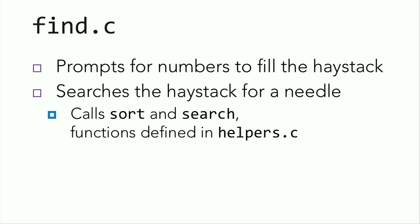The first thing you might notice about find is that we already have code written for us. This is called distribution code, so we're not just writing our own code from scratch anymore. Rather, we're filling in the voids in some pre-existing code. The find.c program prompts for numbers to fill the haystack, searches the haystack for a user-submitted needle, and it does this by calling sort and search, functions defined in helpers.c. So find.c is written already — your job is to write helpers.